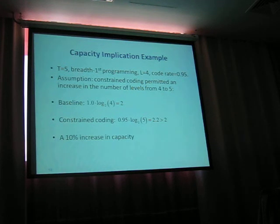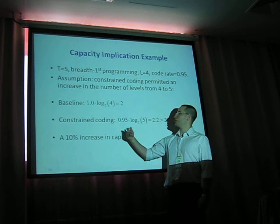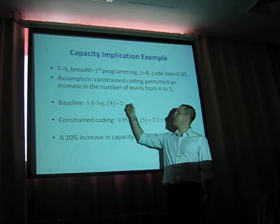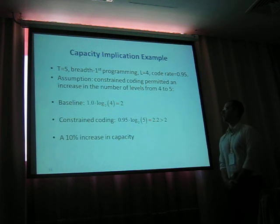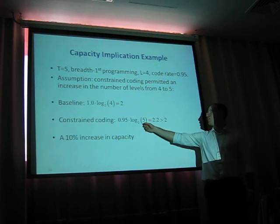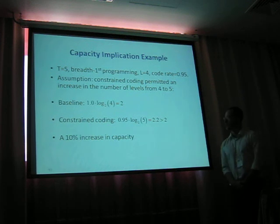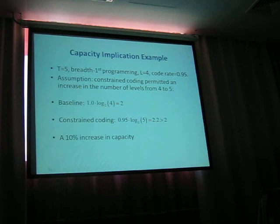Let's take another example. With T equals 5 and breadth-first programming with L equals 4, we've been able to build a code rate of 0.95. We've been able to narrow these distributions so that the number of levels per cell can be increased from 4 to 5. So our baseline was uncoded information storing log base 2 of 4, meaning 2 bits per cell. With the use of constraint coding at code rate 0.95 and number of levels increased from 4 to 5, we've been able to store 2.2 bits per cell, which is a 10% increase in capacity. We can use this in the same manner to increase capacity or to improve the reliability of flash memory cells.